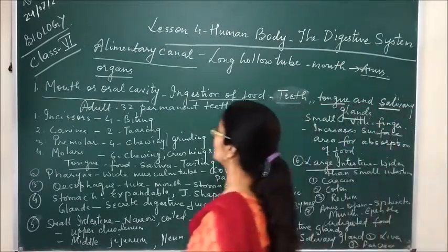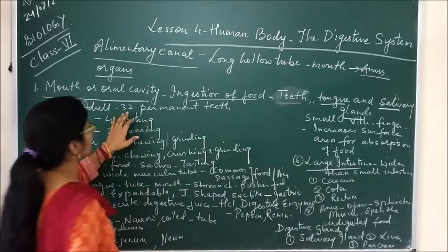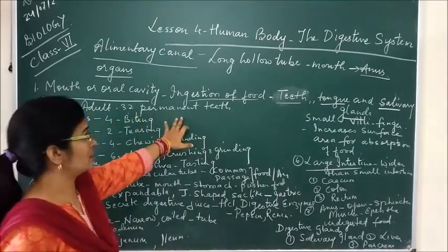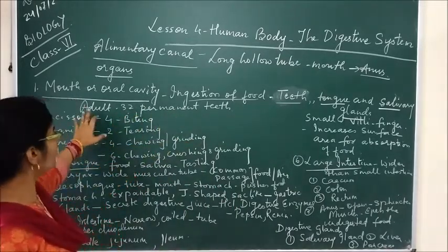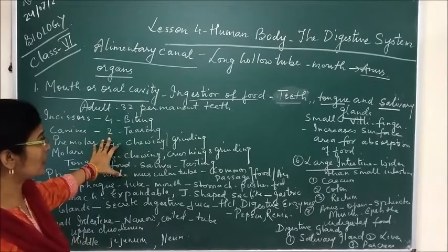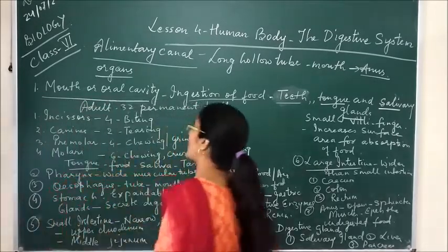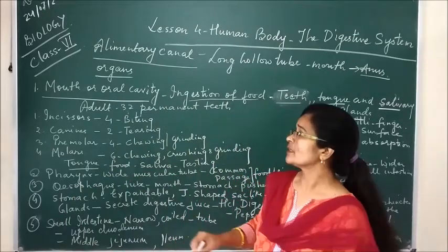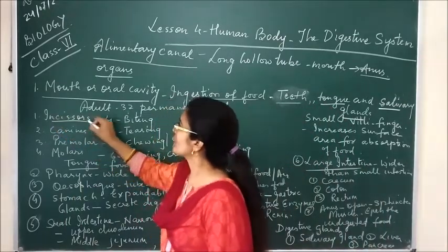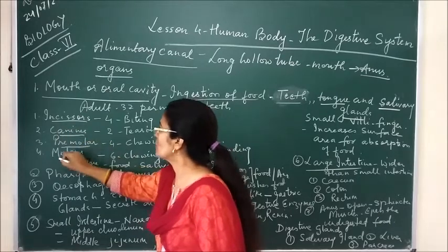In an adult person there are 32 permanent teeth, and there are 4 types of teeth. These are the incisors, canines, premolars and molars.